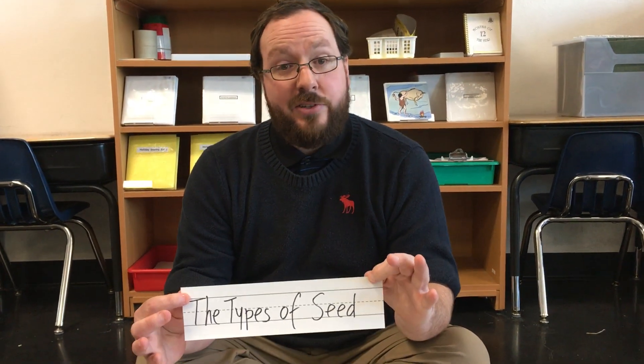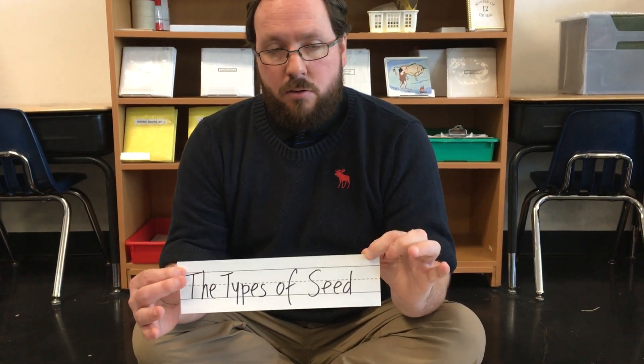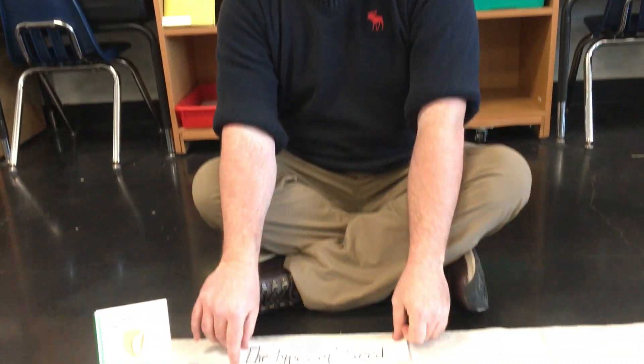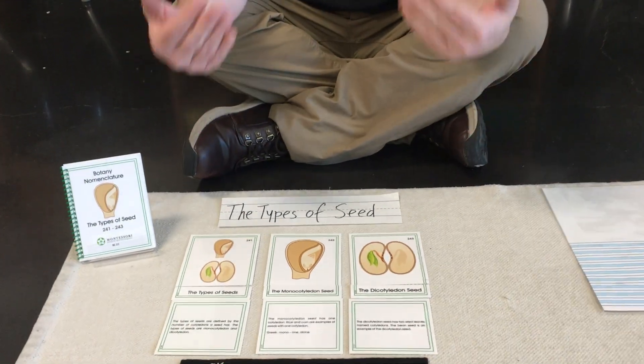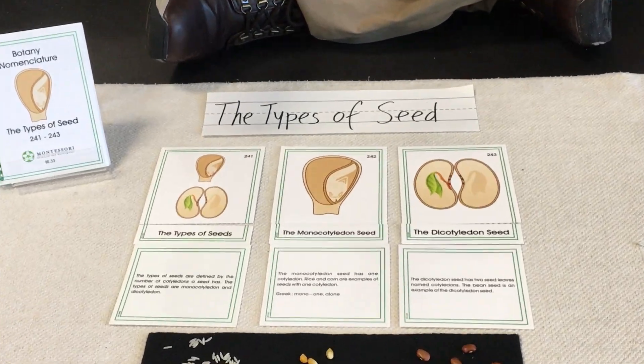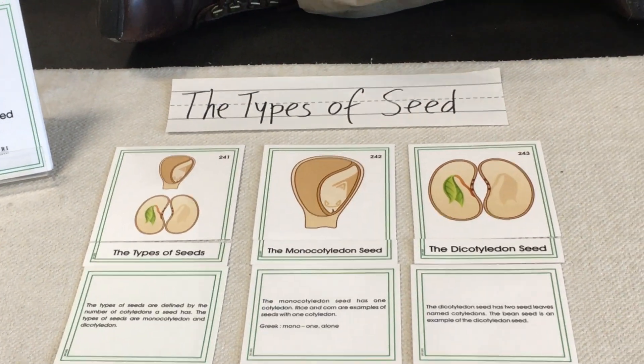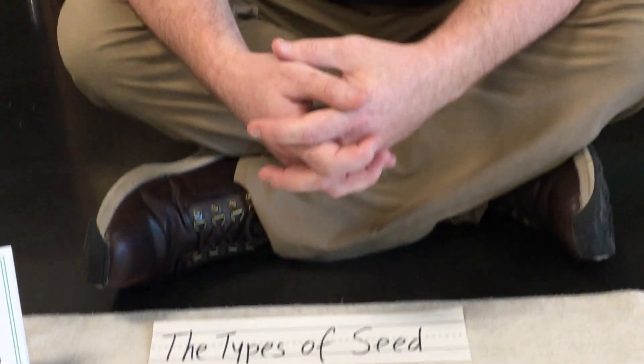Good afternoon, boys and girls. Welcome to another Botany Circle. Today we're focusing on the types of seeds. There are only two types of seeds, and the way you decide which type of seed it is is by how many cotyledons they have. Remember from last lesson: the cotyledon is the middle part of the seed, the part that the embryo has to consume to be able to grow.